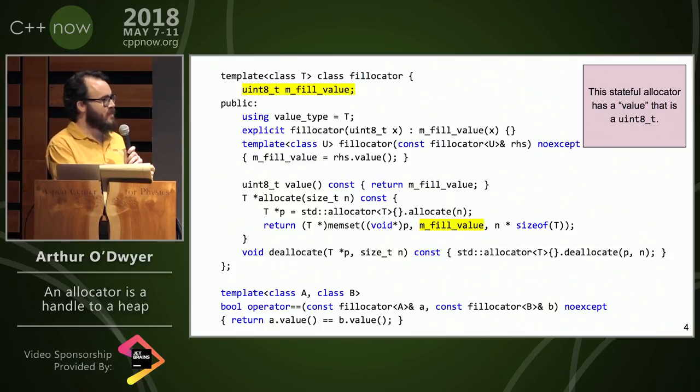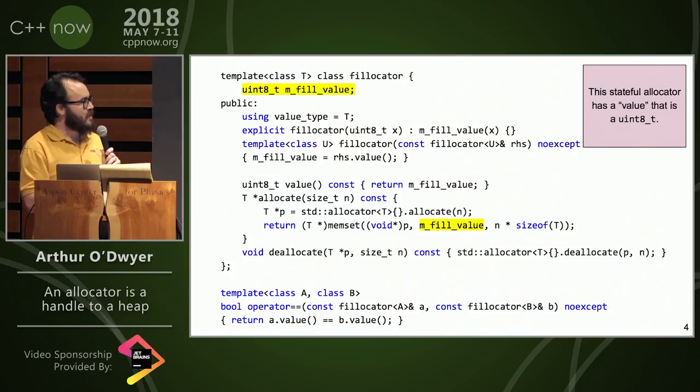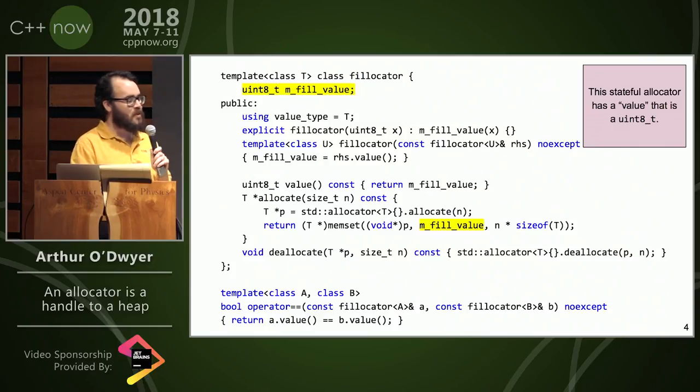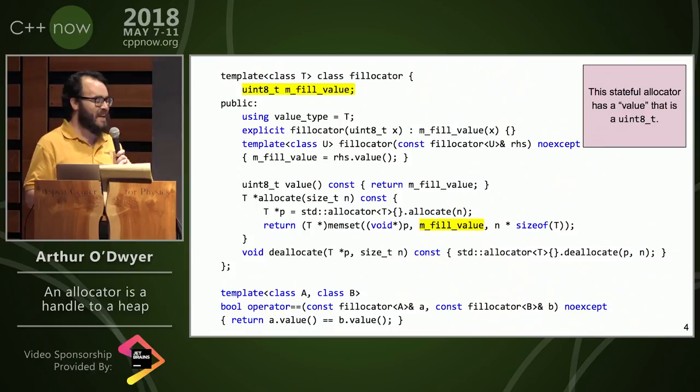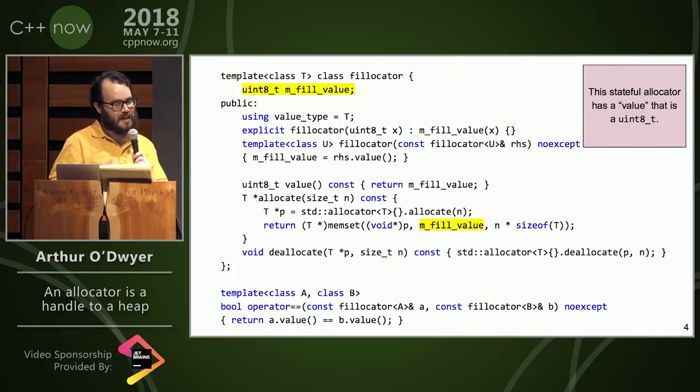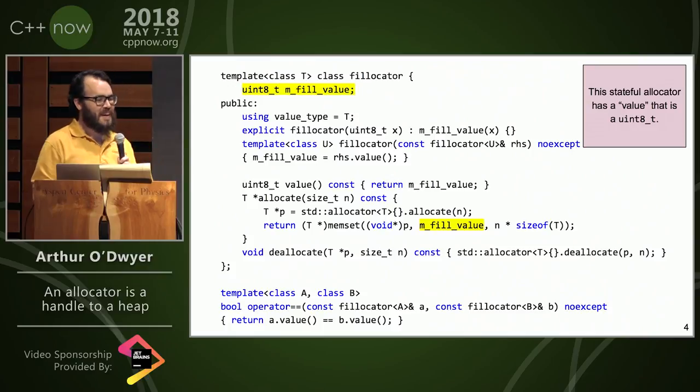It always uses the standard allocator new and delete. Its value is actually a character that it's going to fill the memory with before it hands it back to the user. It has perfectly value semantics for this. The operator equal equal says, am I going to fill with the same value? And this is a perfectly standard conforming allocator.